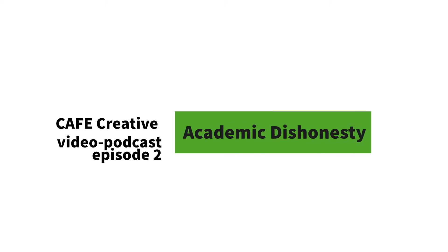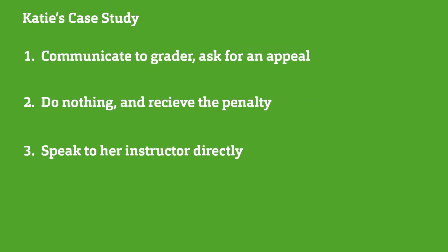So out of five options, what do you think should be the penalty for Katie? And she only did this for this one question. Remember Katie's case study from the beginning of episode one? It turns out there are multiple ways to deal with Katie's situation, and a lot of it can be controlled by her or influenced by the instructor. I'm Victoria, and welcome to Cafe Creative, episode two of Academic Dishonesty.